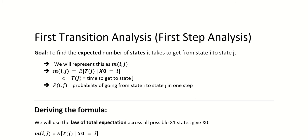In this video, I'm going to go over first transition analysis, also known as first step analysis. The goal of first transition analysis is to find the expected number of steps it takes to get from state I to state J. We represent this as M-I-J. You could also word this as: the expected amount of time T-J to get to state J, given that X0 equals I. P-I-J is the probability of getting from state I to state J in one step.